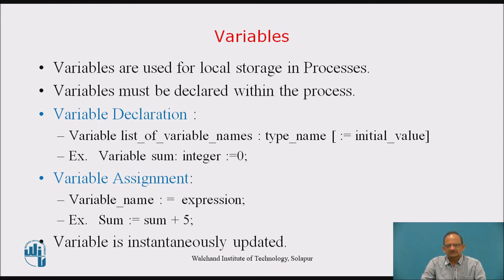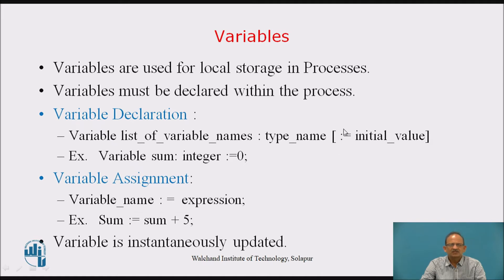Variables are used for local storage in processes. Variables must be declared within the process — variable declaration is only possible in the declaration part of a process, and they can only be used in the process in which they are declared. The architecture declaration part cannot have a variable declaration. To declare a variable: use the keyword 'variable', followed by a list of variable names, a colon, the type name, and then an optional initialization value.